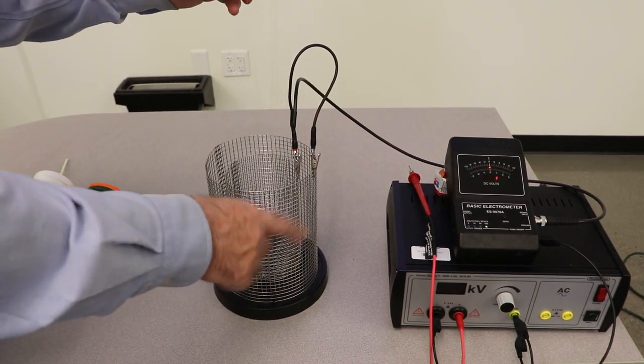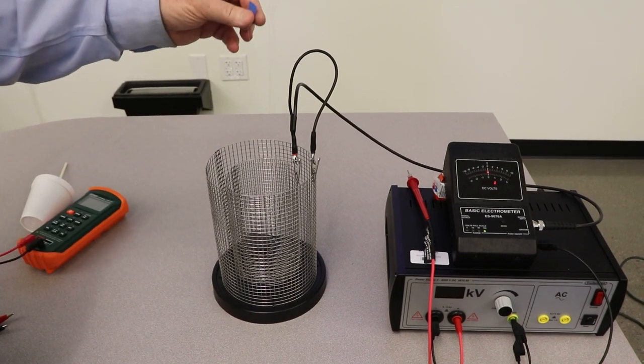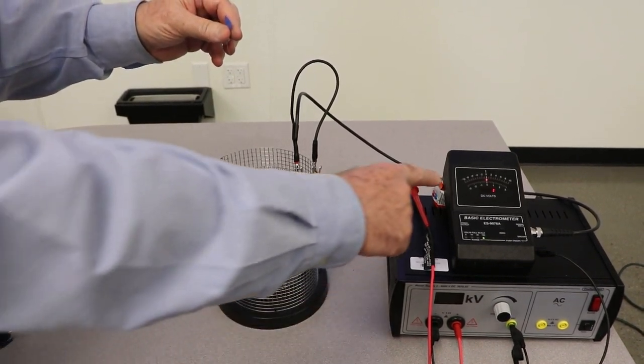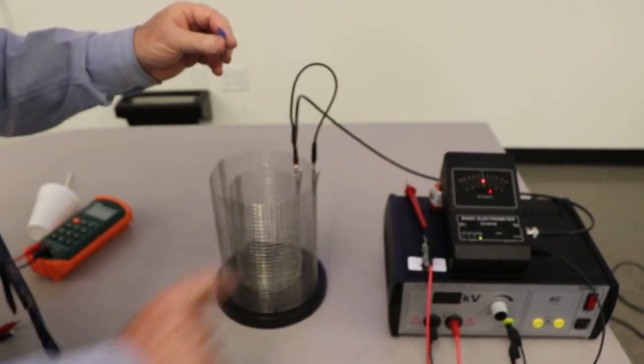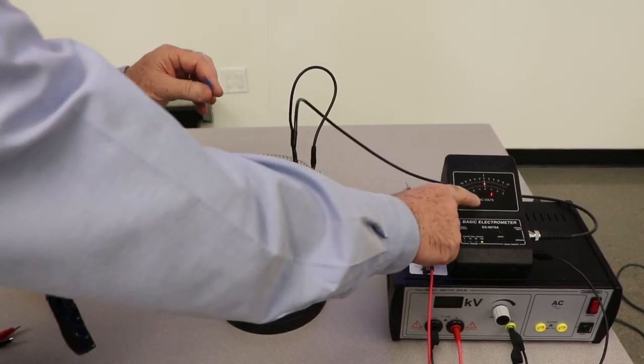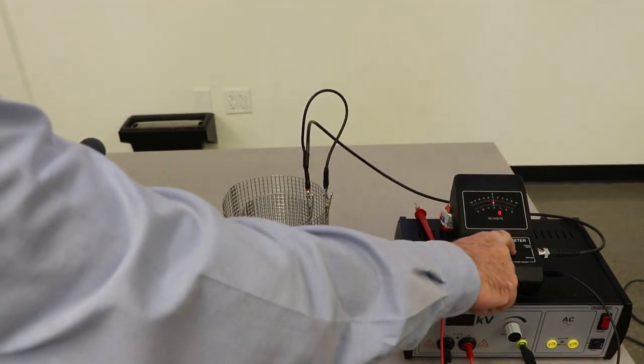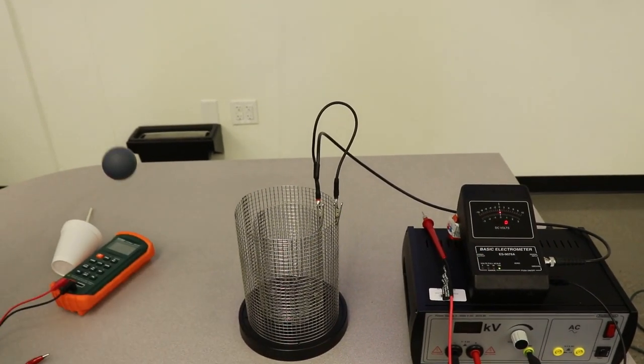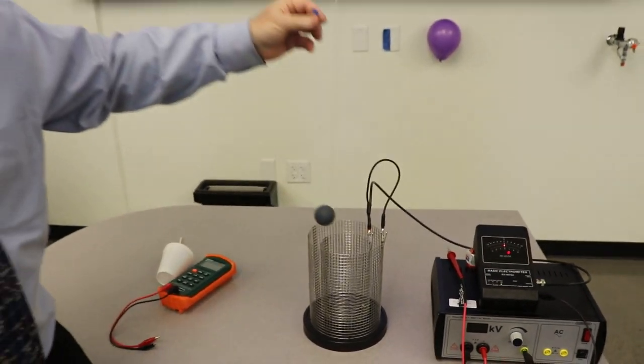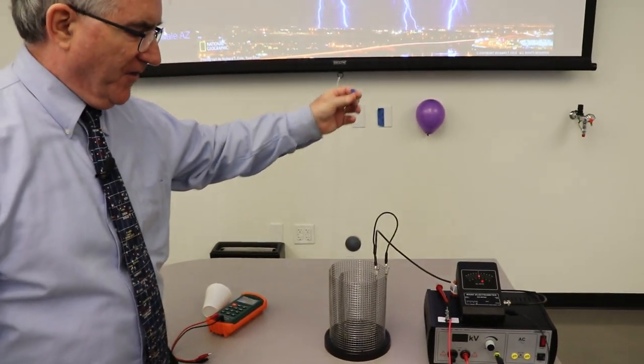And then the outside will become negatively charged in relation to that positive charge. And it will show up as a voltage on this very sensitive voltmeter over here. So right now, it's basically set on zero. And there's no charge on this right now. As you can see, when I put it in there, nothing happens.